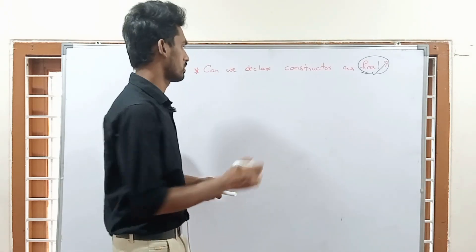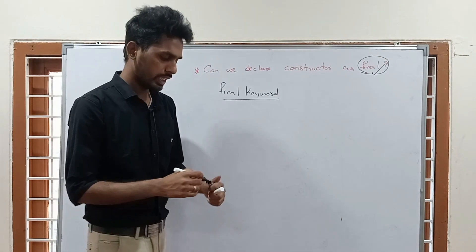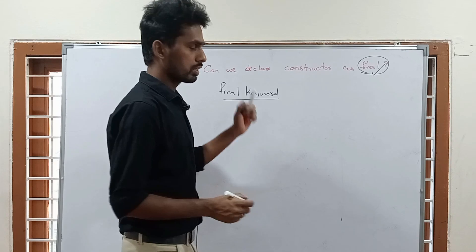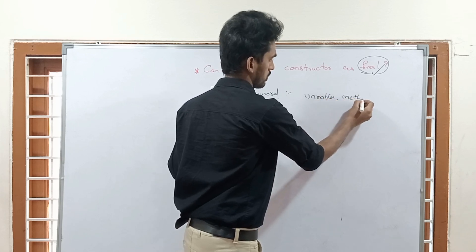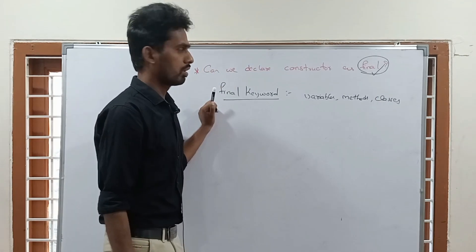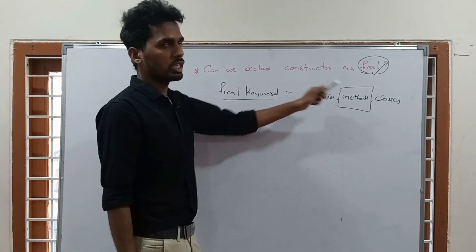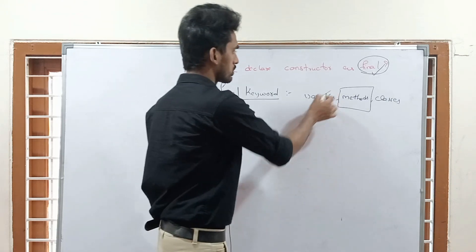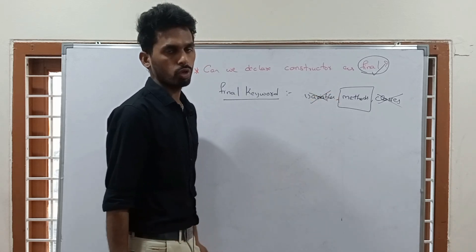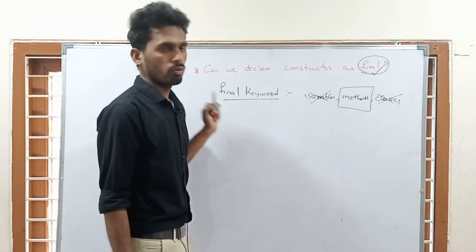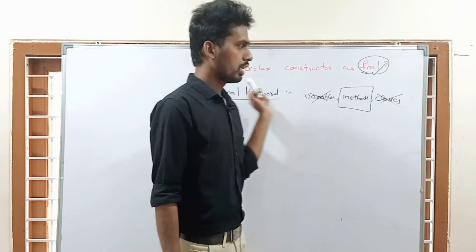Let's discuss the final keyword. It is one of the keywords in Java. We can use the final keyword for variables, methods, and classes. If you use the final keyword for a variable, we cannot change that value. If you use the final keyword for a method, we cannot override that method.